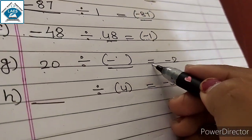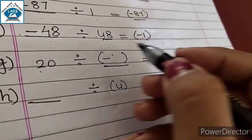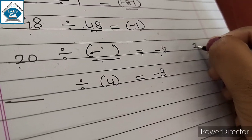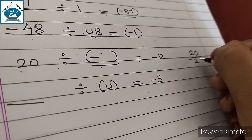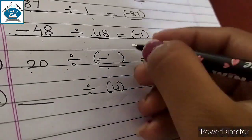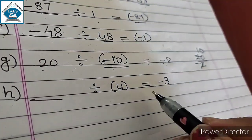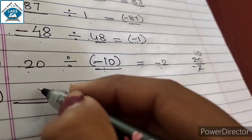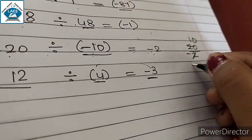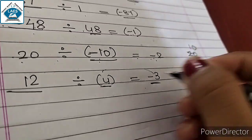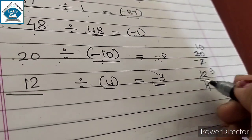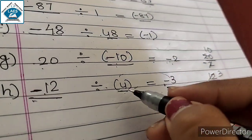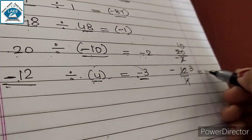Part G: 20 divided by ___ equals minus 2. The numerator is positive and answer is negative, so the blank is negative. 2 tens are 20, so 20 divided by minus 10 gives minus 2: answer is minus 10. Another sub-part: minus 3 is needed and the divisor is 4. 4 threes are 12, so minus 12 divided by 4: answer minus 3.